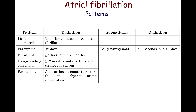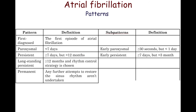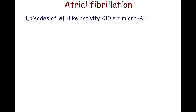Additionally, early paroxysmal atrial fibrillation denotes an episode lasting from 30 seconds to 24 hours. Early persistent atrial fibrillation lasts longer than seven days but less than three months. Episodes of atrial fibrillation-like activity shorter than 30 seconds are called micro-atrial fibrillation.